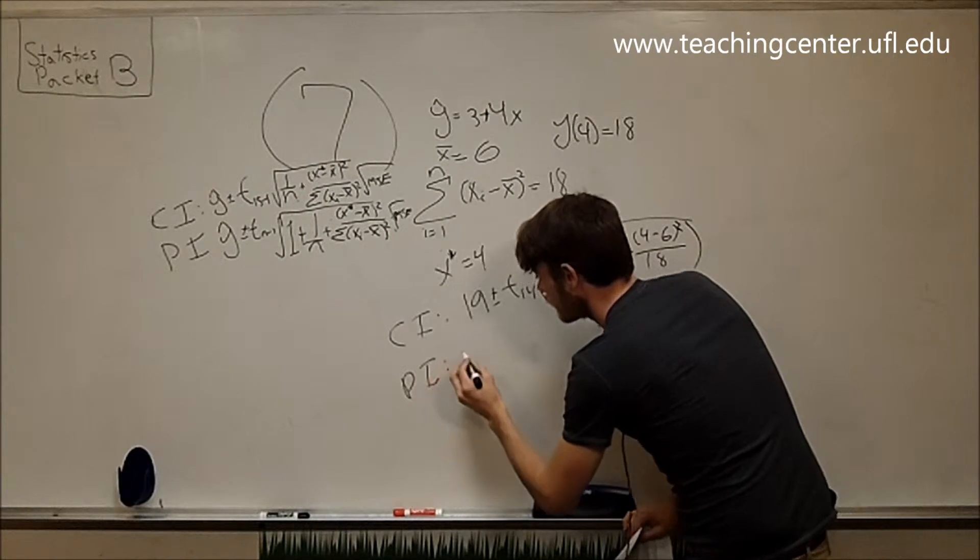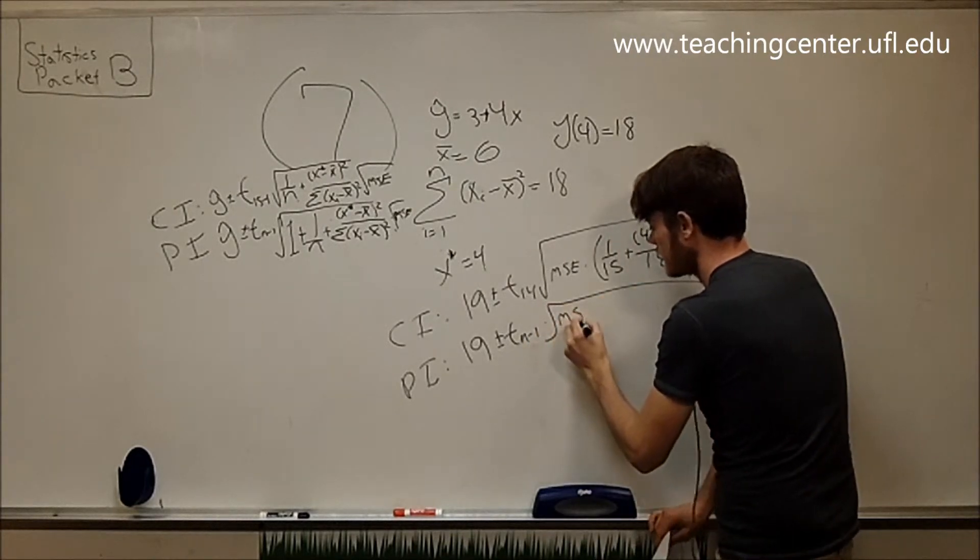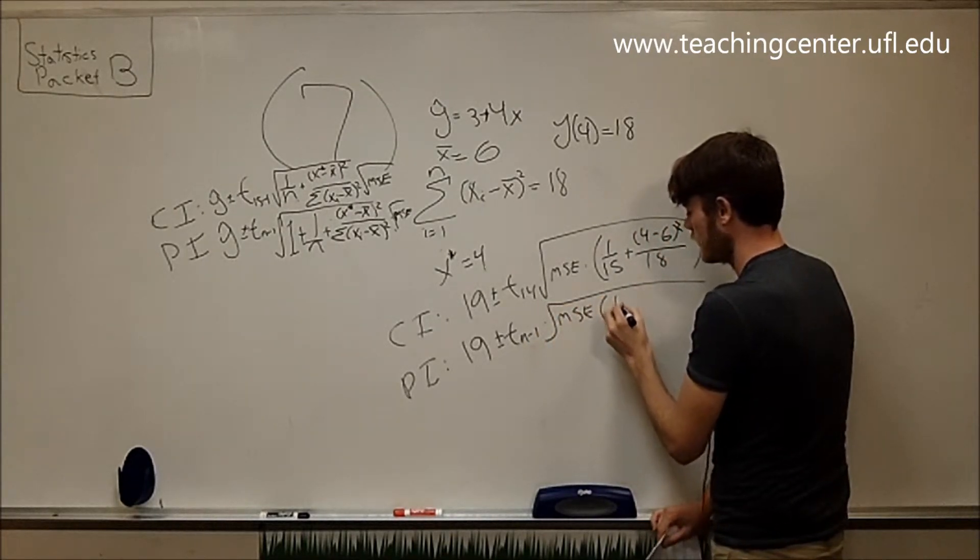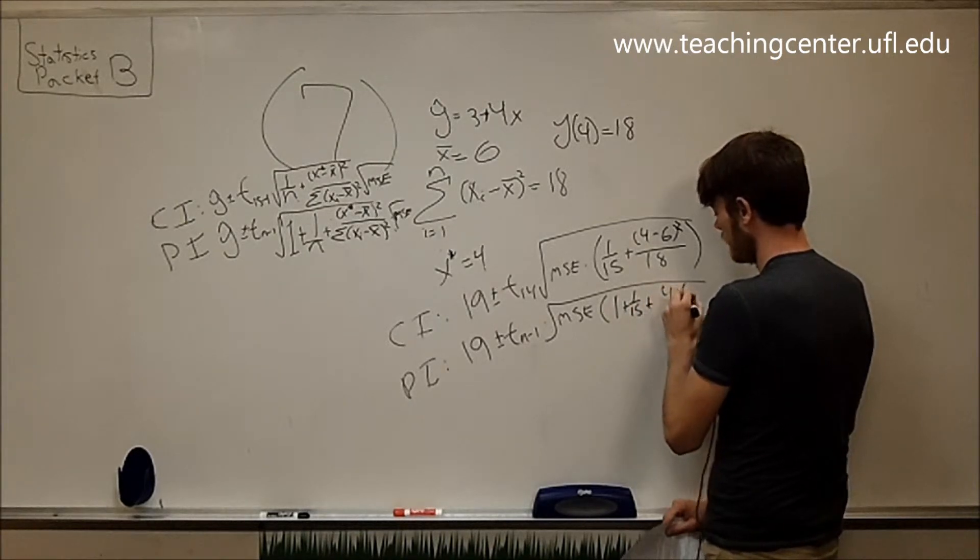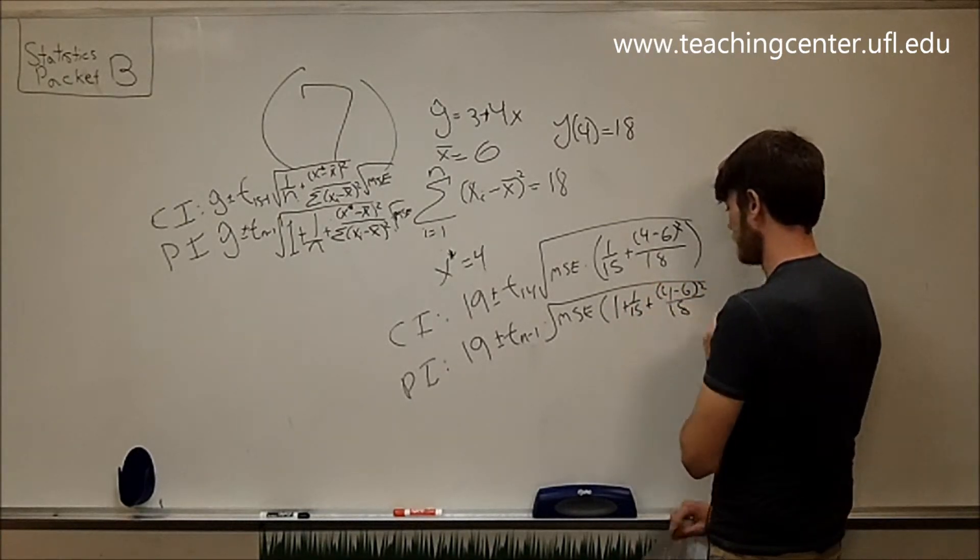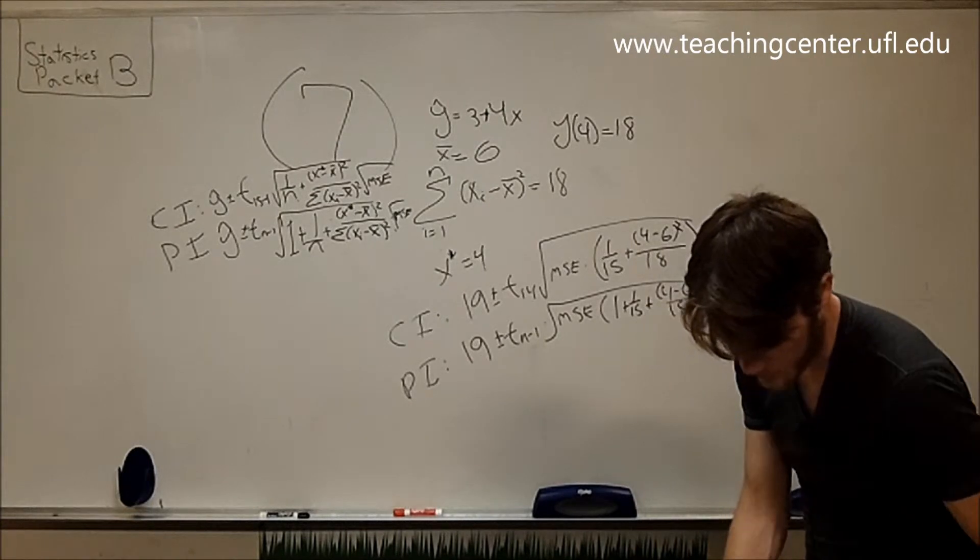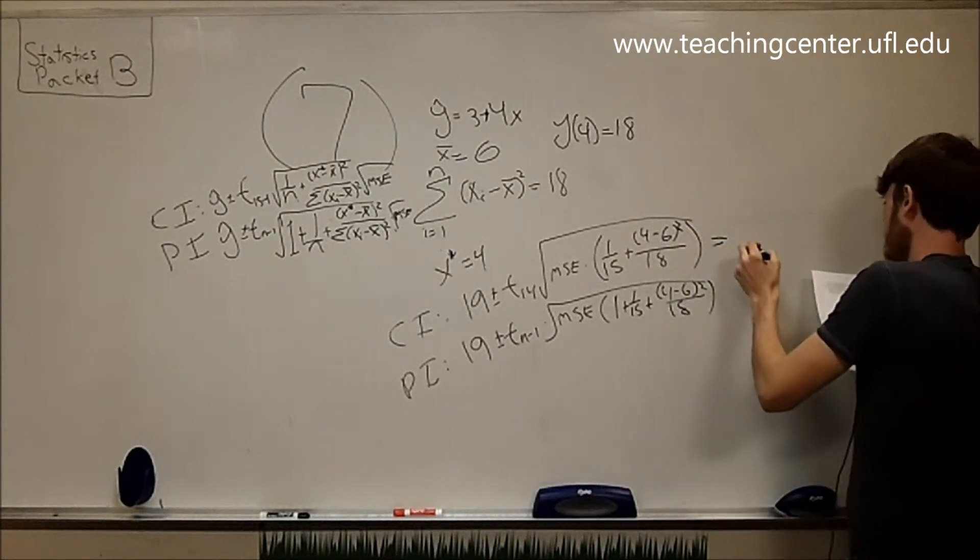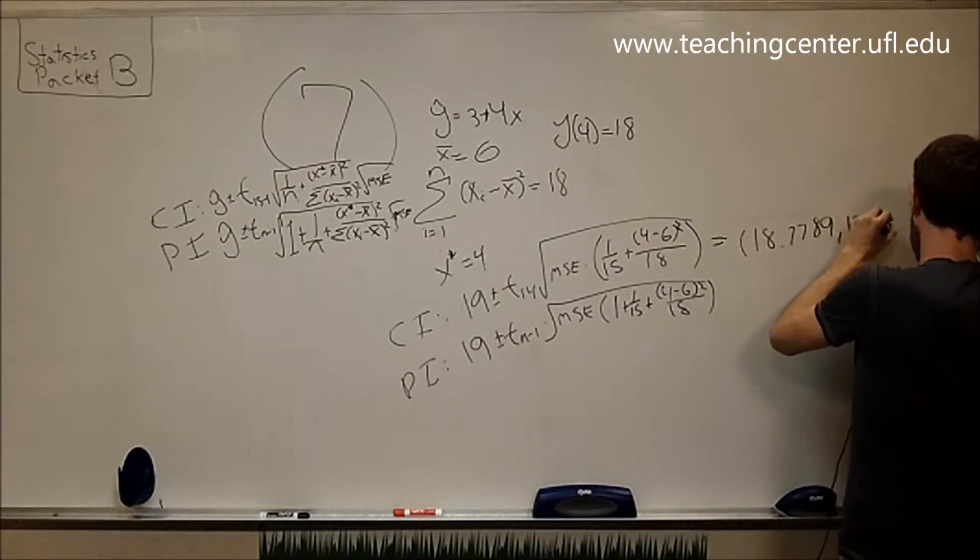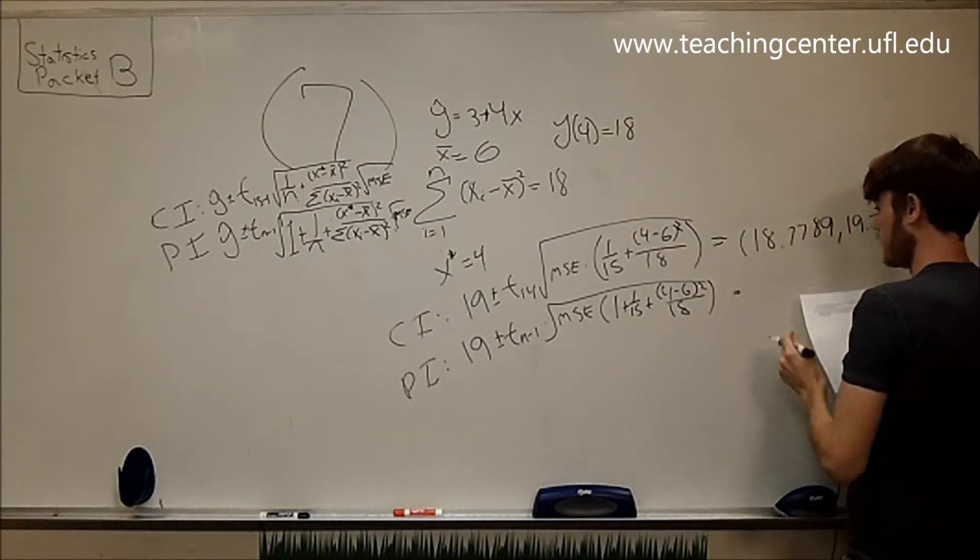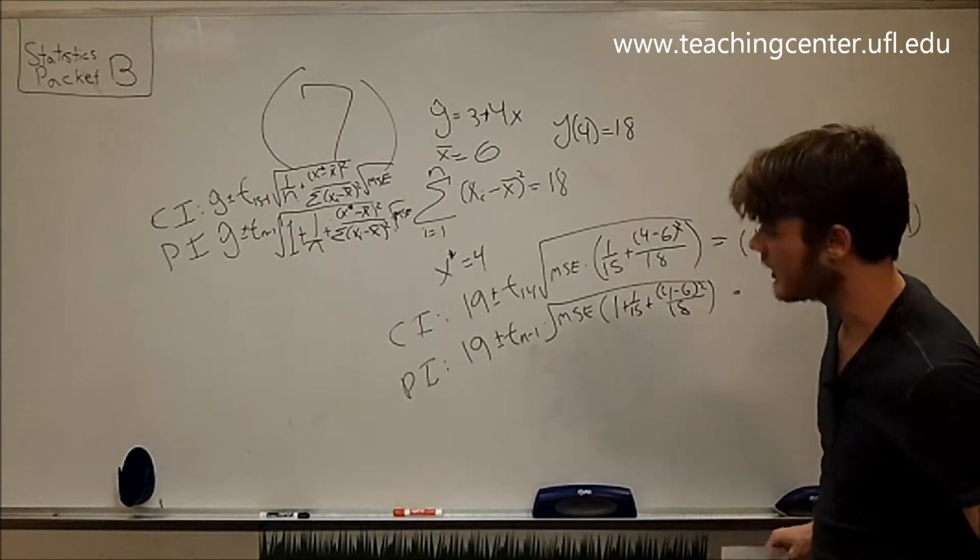And our prediction interval is similar to this. It's 19 plus or minus t at n minus 1 times the square root of MSE times 1 plus 1 over 15 plus, and so this is all the same now. We just need that one factor, 4 minus 6 squared over 18. We're also given that MSE is 0.45.